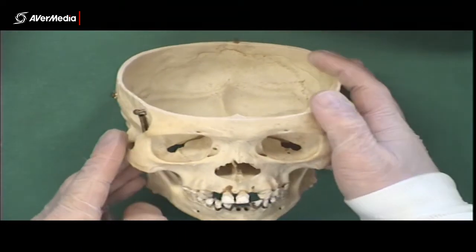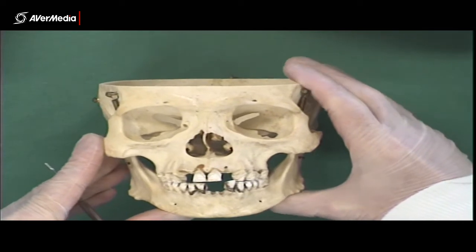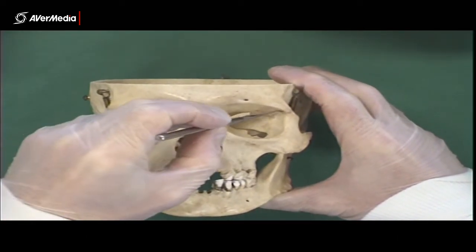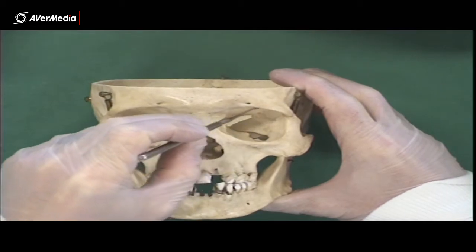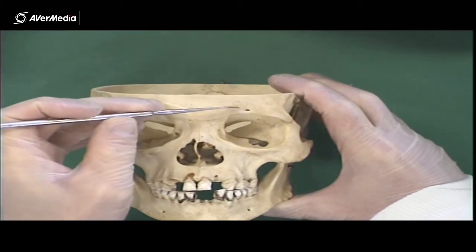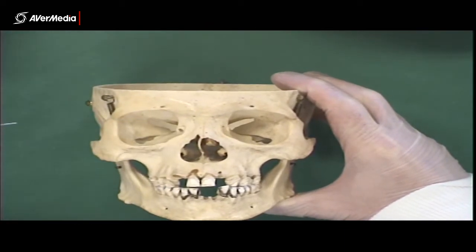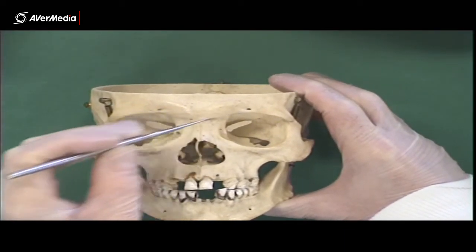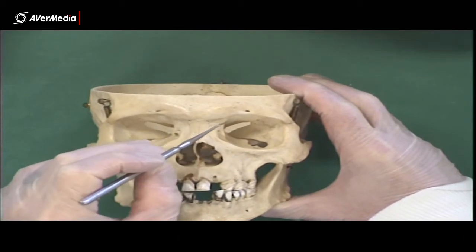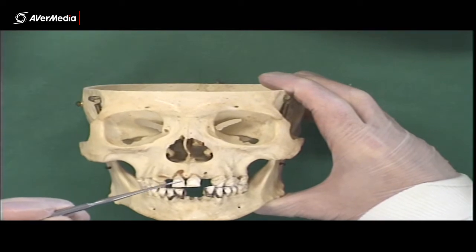Looking at a real skull from an anterior point of view we can see quite a few features. Firstly we have the orbit or eye socket. Just superior to that we have a supra orbital foramen — that's if there's a hole here. Occasionally rather than being a foramen there'll just be a little notch here and then it's called the supra orbital notch.